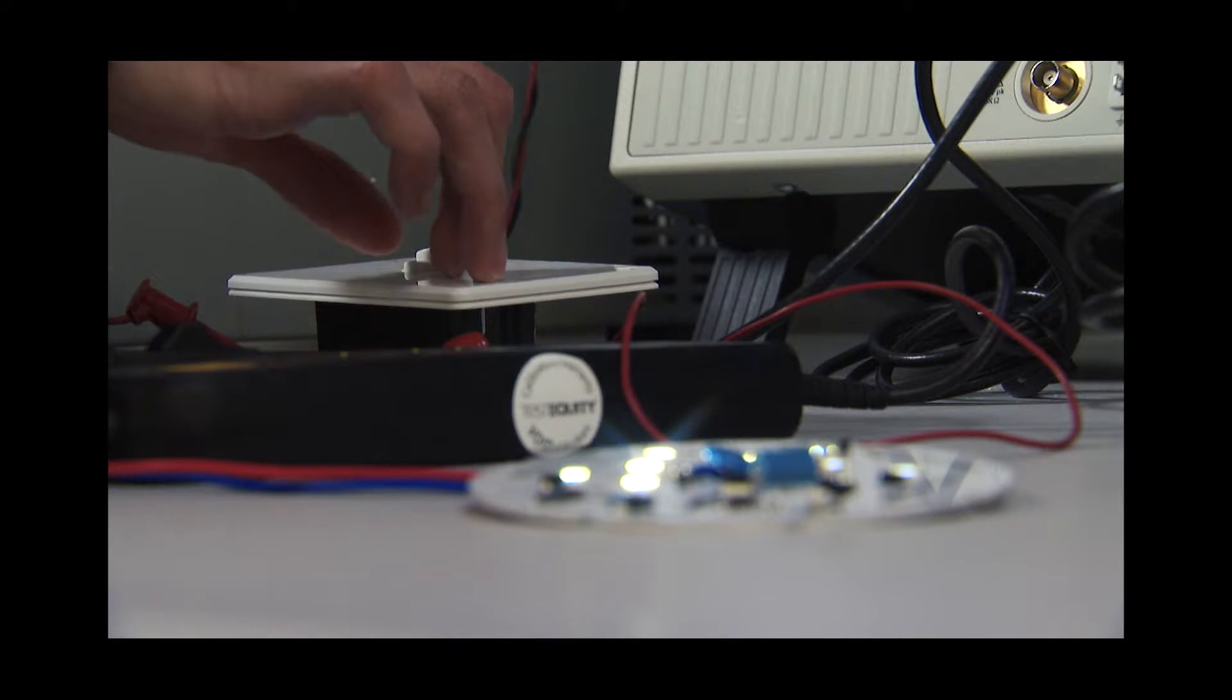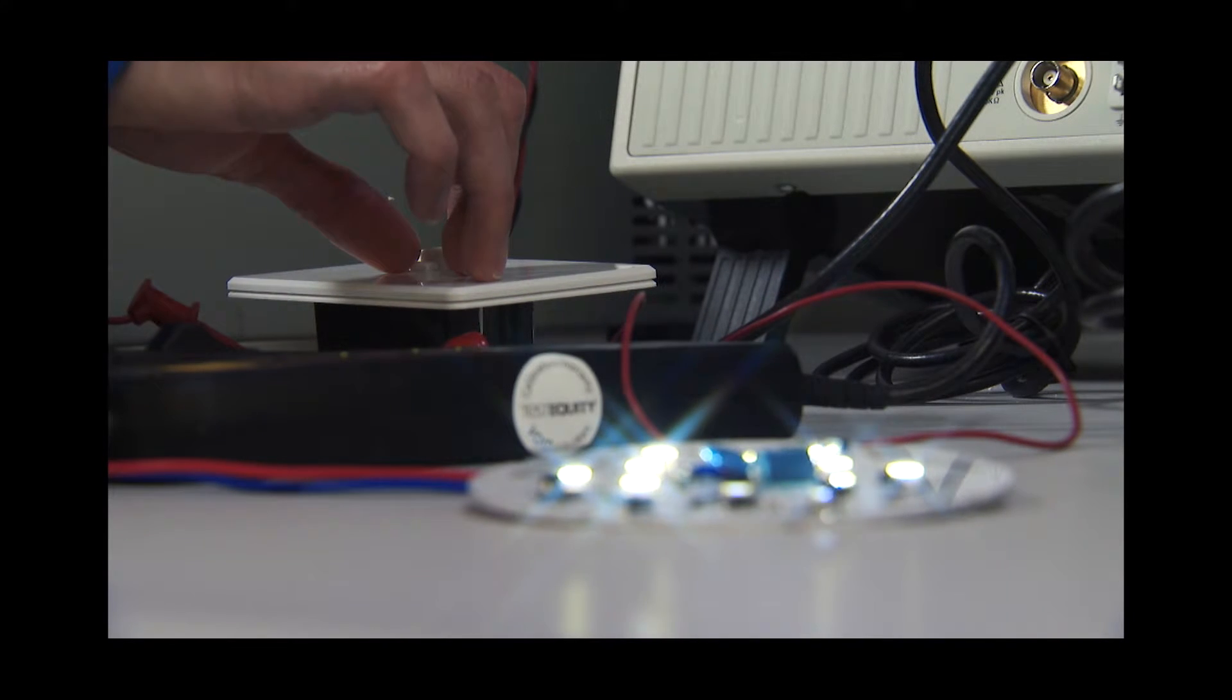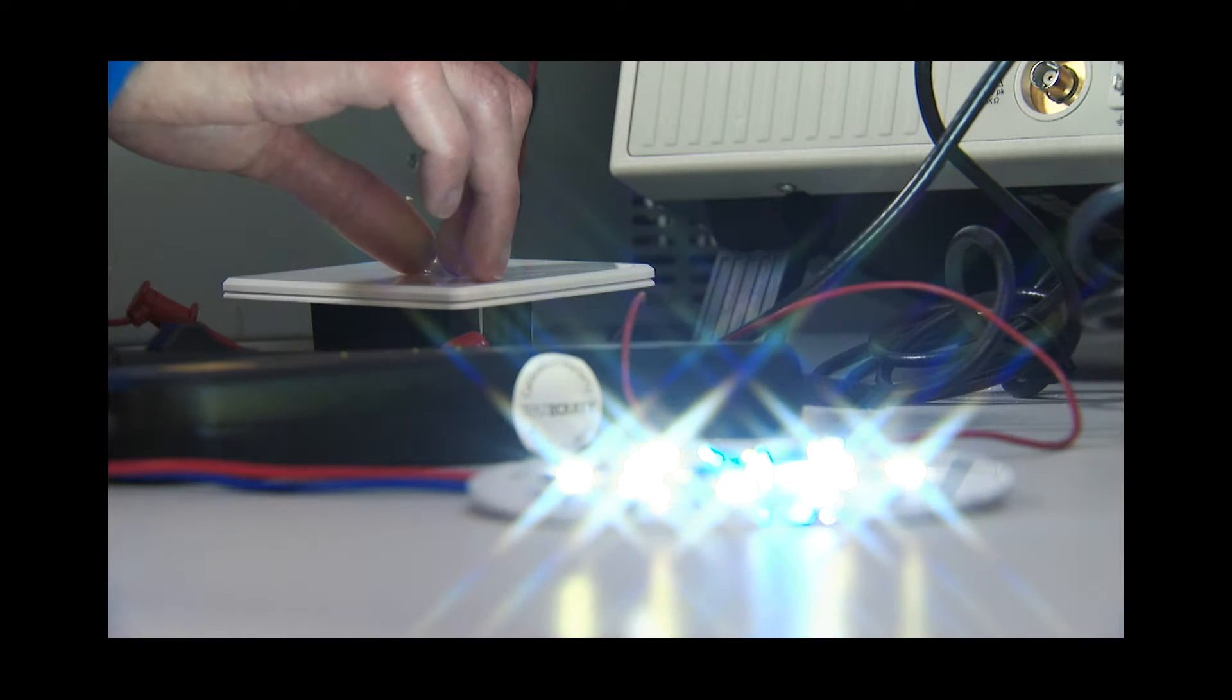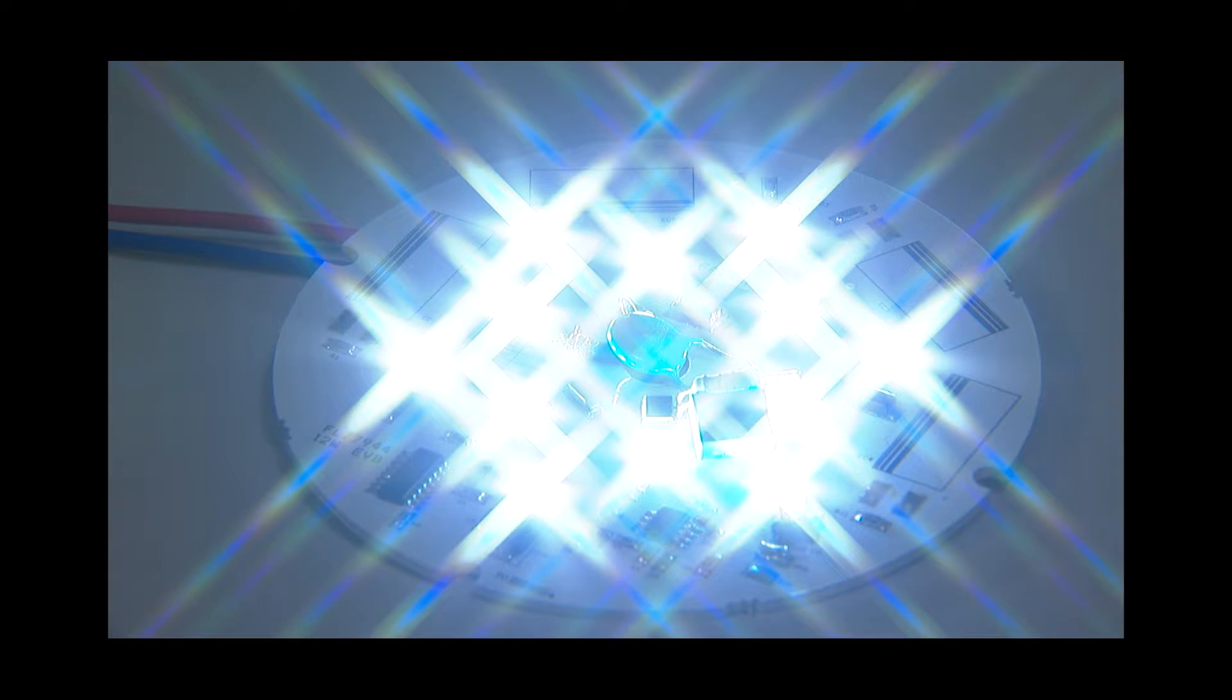For PWM dimming operation, we recommend the dimming signal to be fed through an RC filter so that the signal is actually converted to a DC before we feed it to the driver IC.